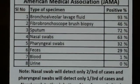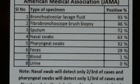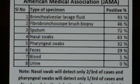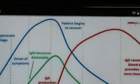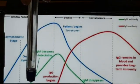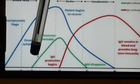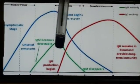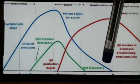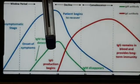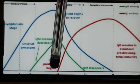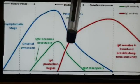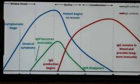We use the test to rule out infection. If the test is positive, there is a 98% chance it is truly positive. If the test is negative, it is most likely truly negative — the chances of a false negative are low.